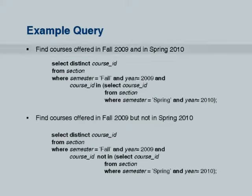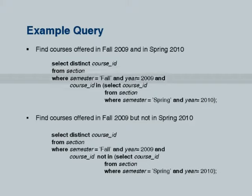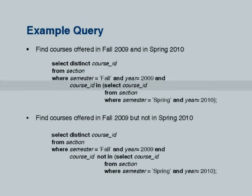Find courses offered in fall 2009 and in spring 2010. We saw how to do this earlier using intersection; we can even do this using join, but here is how to do it with a subquery. This says: SELECT DISTINCT course_id FROM section WHERE semester is spring and year equal to 2010. This subquery is going to return a set of course_id values. As long as the first course_id is in this set and we also made sure that it is offered in fall 2009, it will appear in the output. Why SELECT DISTINCT? Because a course may be offered more than once in fall 2009 — you can have two sections — so if you do not do a DISTINCT it will appear twice in the result.